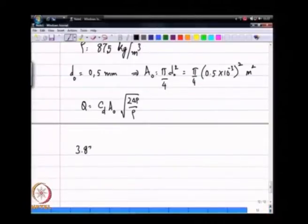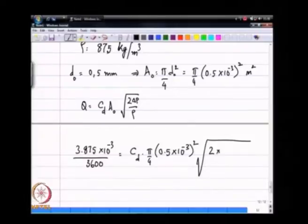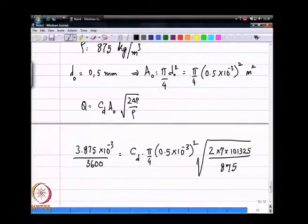I can now calculate cd. Q is 3.875 into 10 power minus 3 divided by 3600 equal to cd times pi times 0.5 mm squared divided by 4 times A0. The supply pressure delta P is 7 bar, which is 7 times 101,325 Pascals. The density is 875 and from here I can get a value of cd which comes out to 0.14.